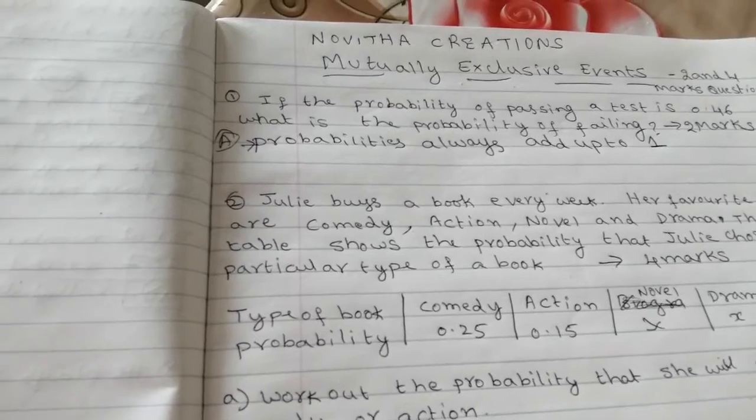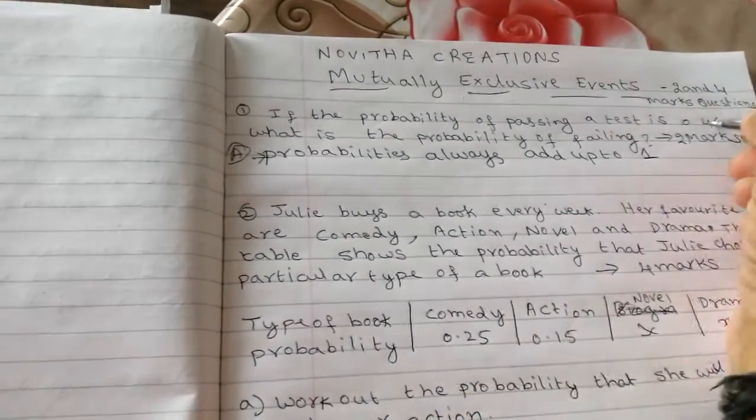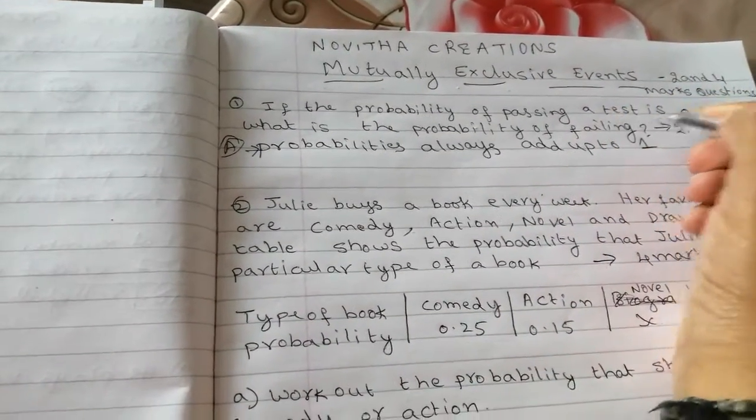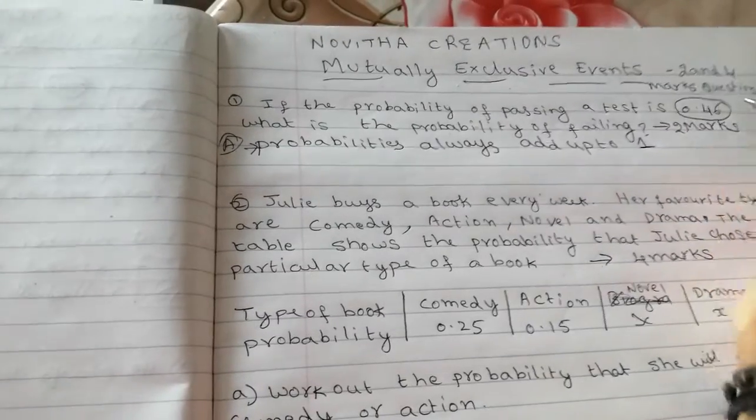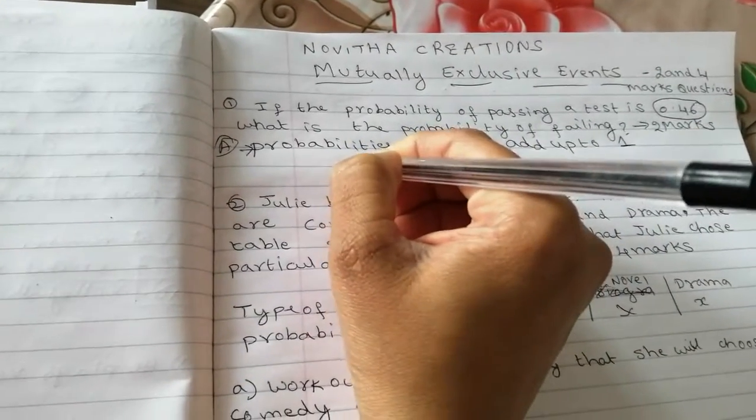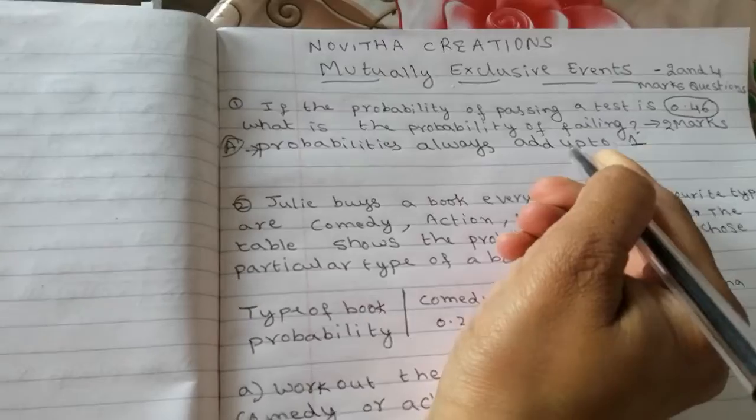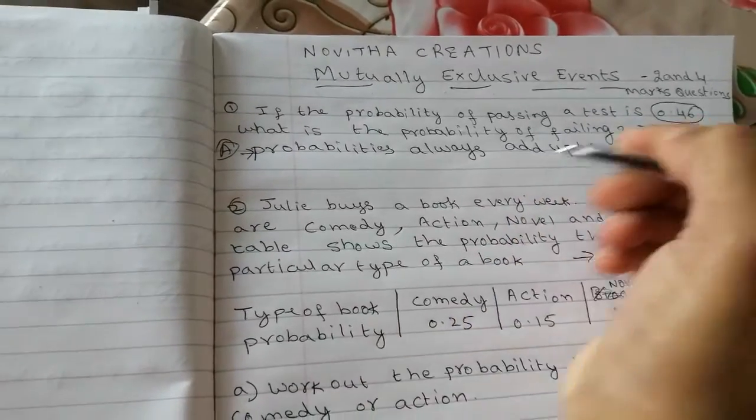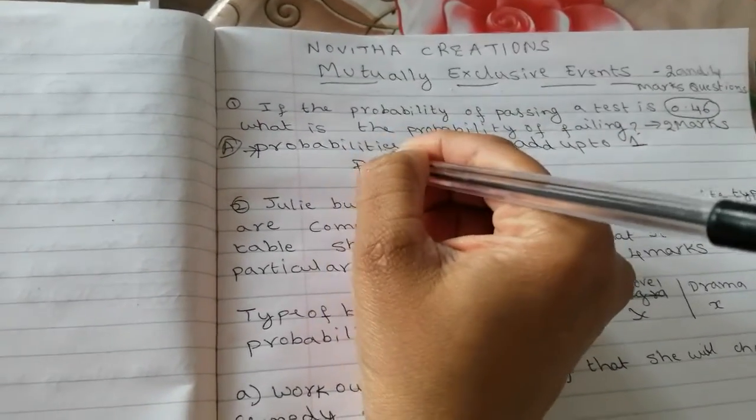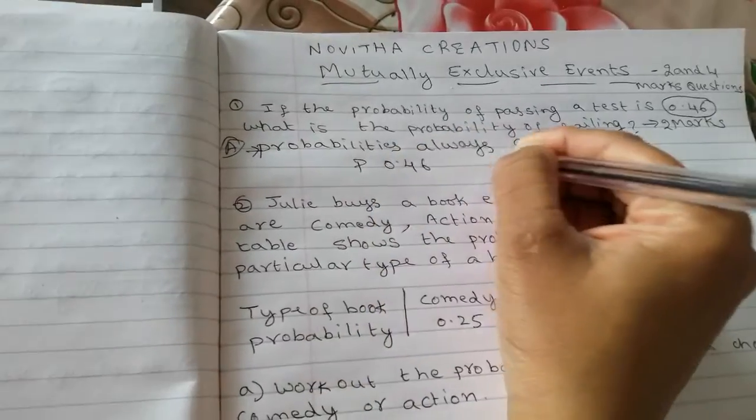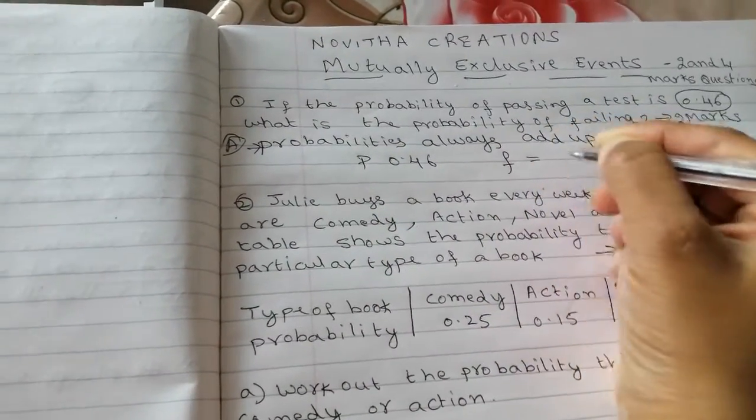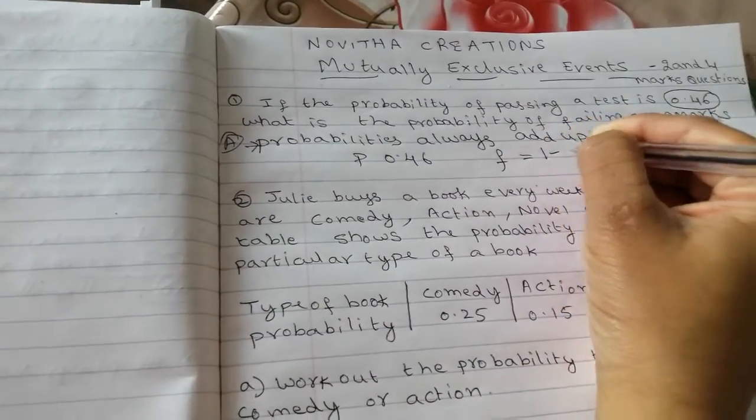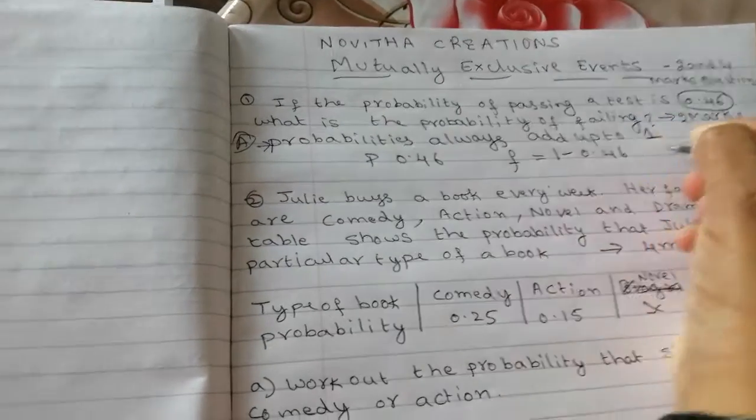And then, they given probability of passing a test is 0.46. So what is the probability of failing a test? Passing is 0.46, so failing is when you do 1 take away 0.46, because probabilities always add up to 1.